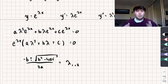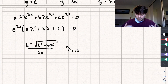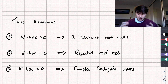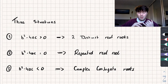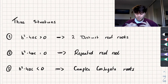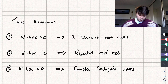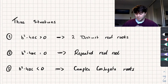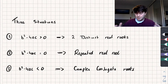There are three different outcomes depending on the discriminant. If b²−4ac > 0, we get two distinct real roots. If b²−4ac = 0, we get one repeated root. And if b²−4ac < 0, we get complex conjugate roots. We'll look at each of these cases in depth.